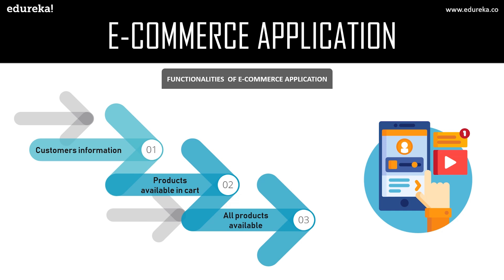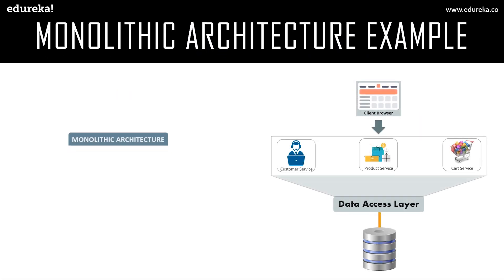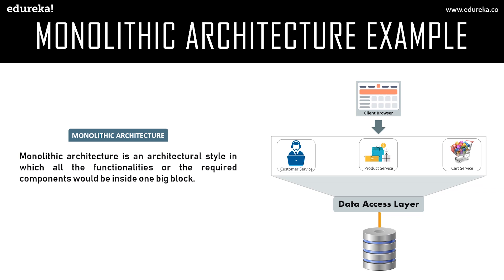Before microservices, in monolithic architecture, all three services — customer, product, and cart — would reside in a single area with a common data access layer and database. The client browser sends a request, which is passed to that single block where all functionalities are present, and data is retrieved from the data access layer and database. Monolithic architecture is an architectural style in which all required components are inside one single block.